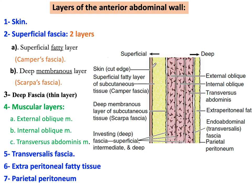Let us start from the superficial part, which is the skin — a very thin layer. Deep to the skin there is a superficial fascia, composed of two layers: a superficial fatty layer, the yellow one, known as Camper's fascia, and a deep membranous layer known as Scarpa's fascia.